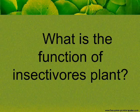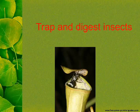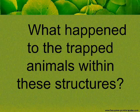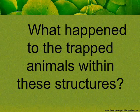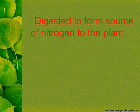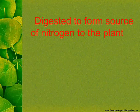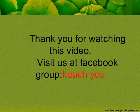What is the function of insectivorous plants? They trap and digest insects. The trapped animals within these structures are digested to form a source of nitrogen for the plant. Thank you for watching this video.